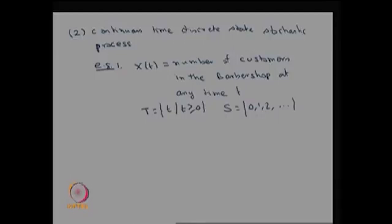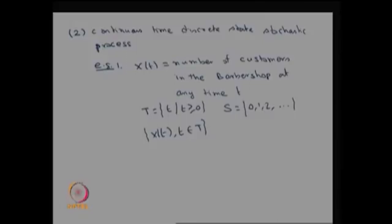Whether the state space is countably finite or countably infinite, we classify it as a discrete state. Therefore this is a typical example of a continuous time, discrete state stochastic process. The collection of random variables X of t for all possible values of capital T forms a real-valued one-dimensional stochastic process where for each t it is a random variable. Since t belongs to a continuous range, it has uncountably many values and is therefore called a continuous parameter, discrete state stochastic process.